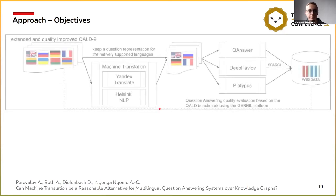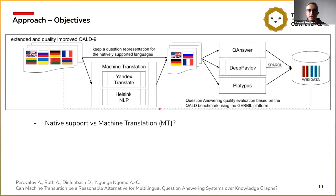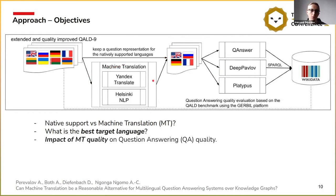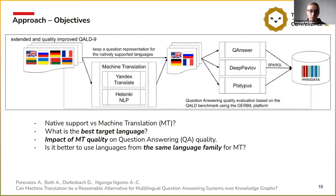We had many objectives from this evaluation. Is it better to answer questions in the native language, or to translate them to another language? What is the best target translation language — to what language is it better to translate? What is the impact of machine translation quality on question answering? Is it better to translate from languages in the same language family? What is the impact of the source language on question answering quality? And many more.